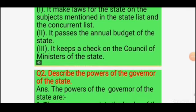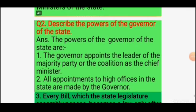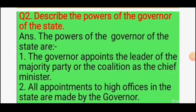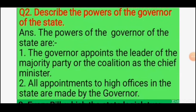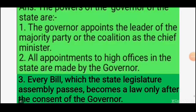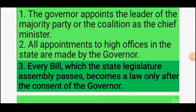Second question: describe the powers of the governor of the state. The answer is: first, the governor appoints the leader of the majority party or coalition as the chief minister. Second, all appointments to high offices in the state are made by the governor. Third, every bill which the state legislative assembly passes becomes a law only after the consent of the governor.